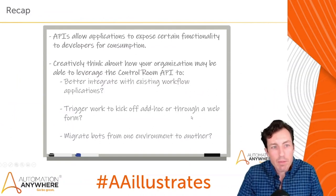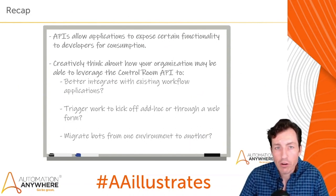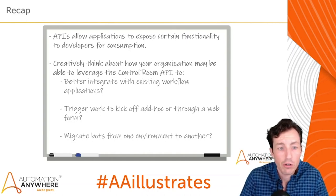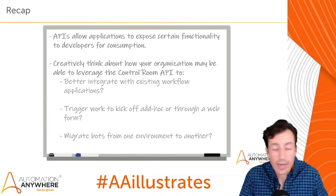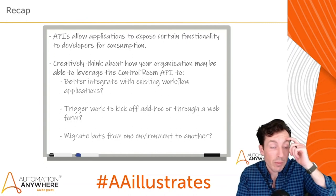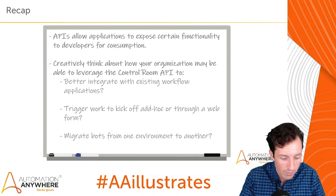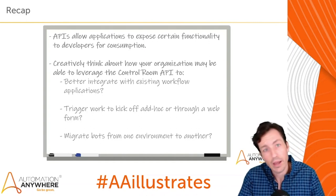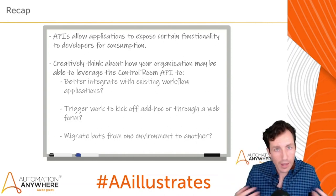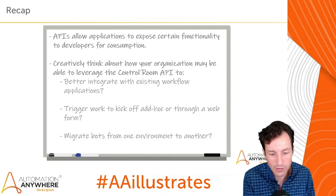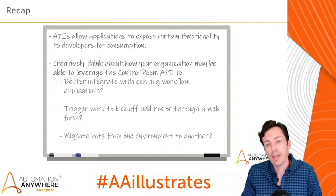As a recap — APIs allow applications to expose certain functionality for developers to consume. With the Control Room API, think creatively about how your organization can leverage it: integrate with existing workflow applications, trigger work ad hoc or through a web form where you enter a few values and hit Submit to kick off a task. You could also migrate bots from one environment to another — as a former COE lead I know moving from dev to test to production can be tricky. Building an API-driven application to handle that means you only have to do it once.